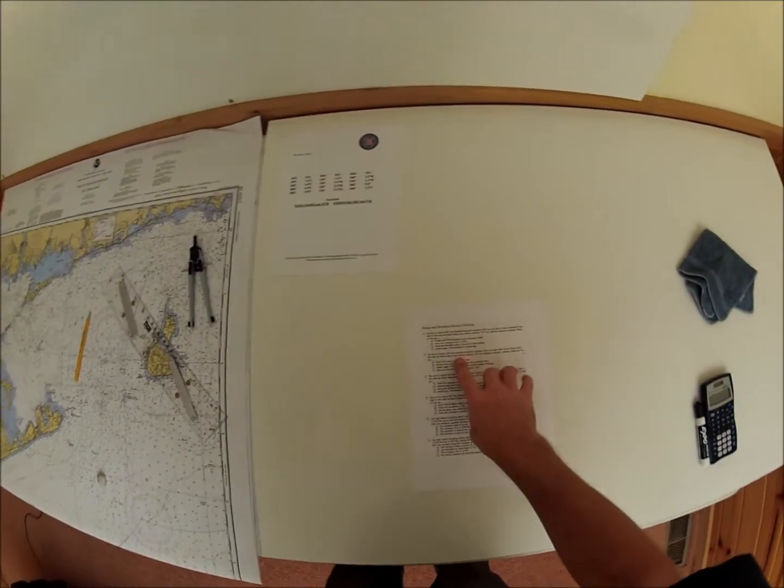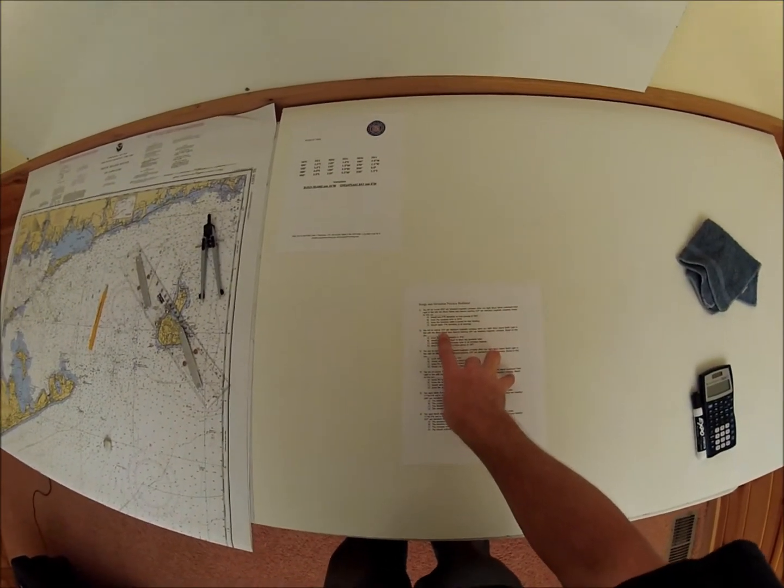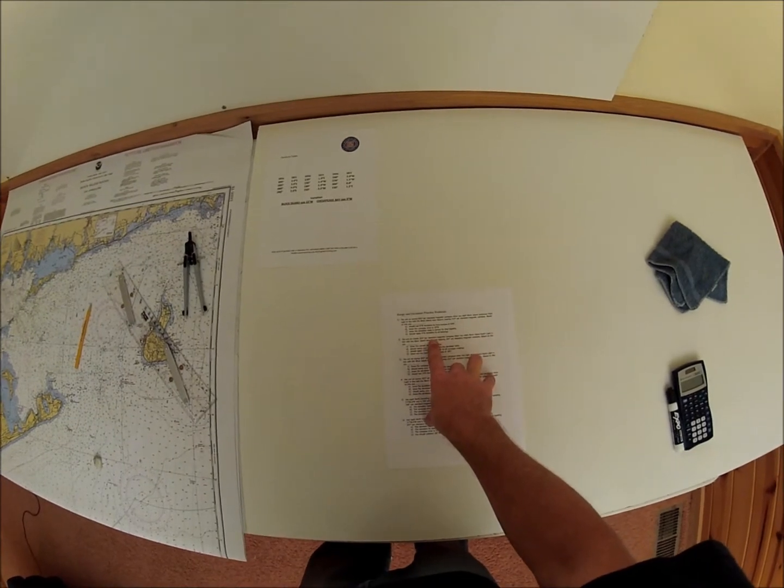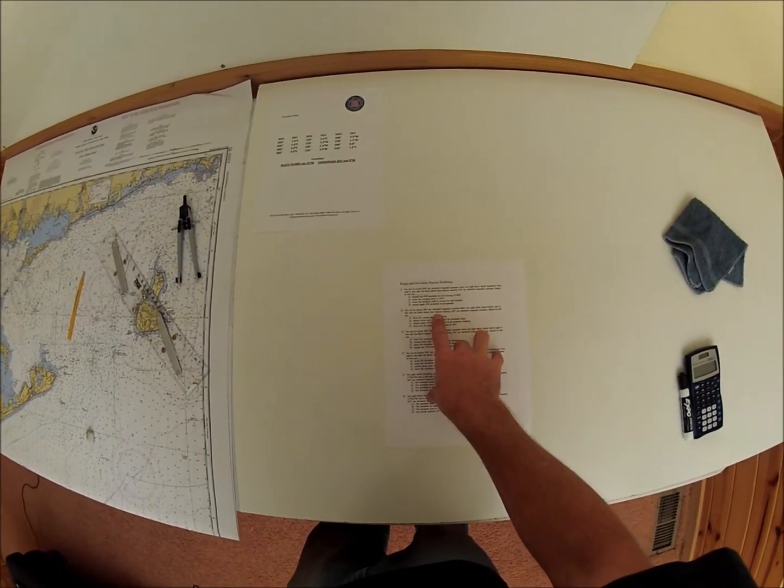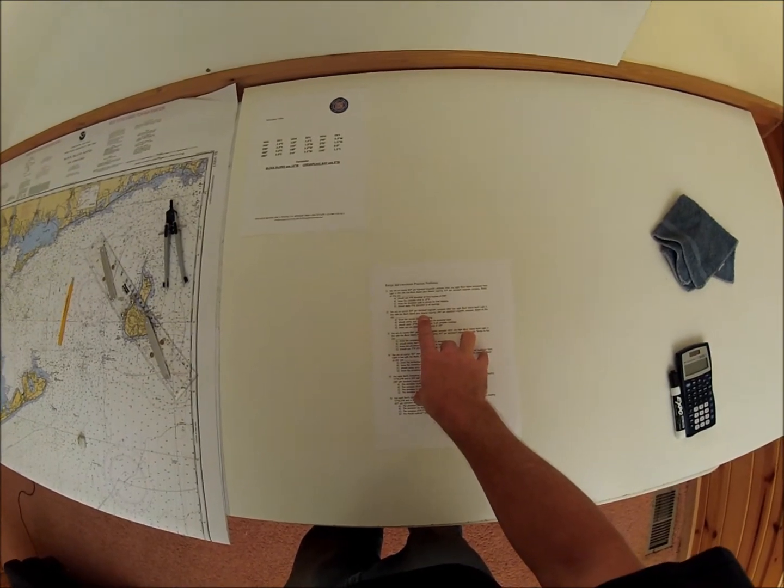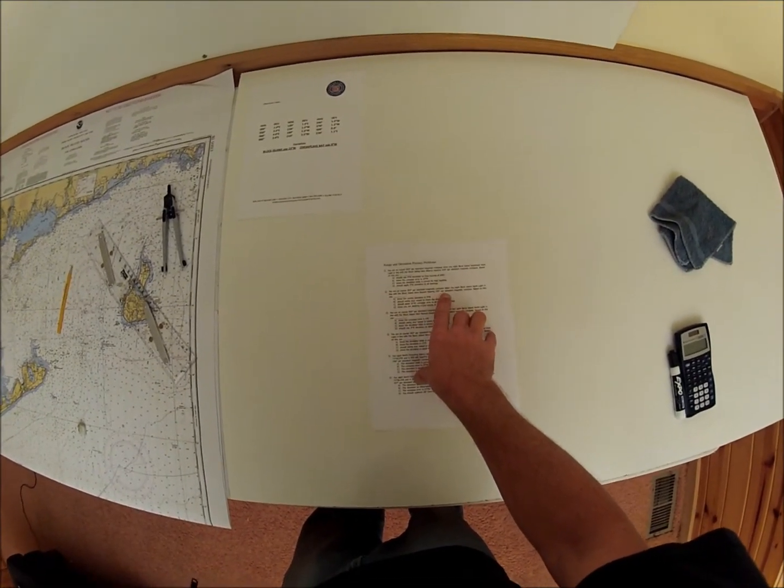Range and Deviation Practice Problem 2. You are on course 203 per standard magnetic compass when you sight Block Island North Light in line with Block Island Arrow Beacon bearing 194 degrees per standard magnetic compass.